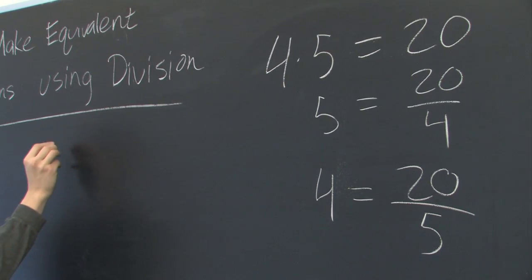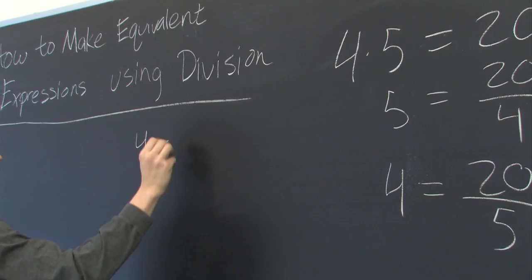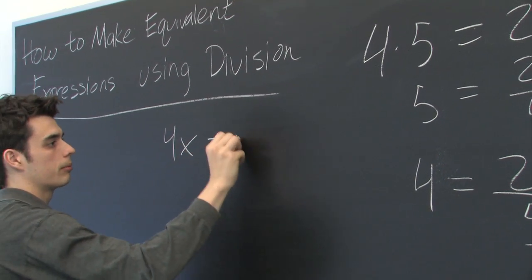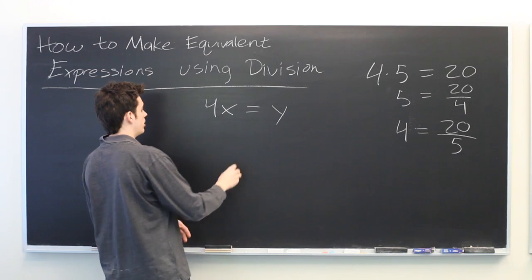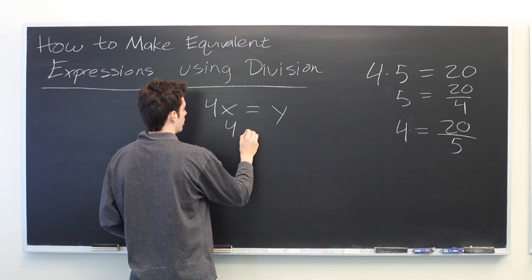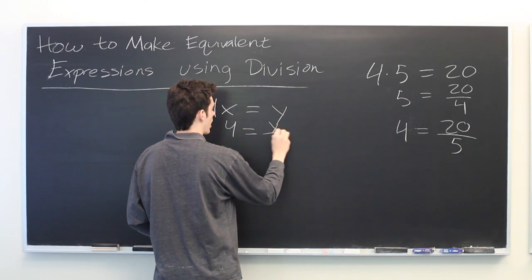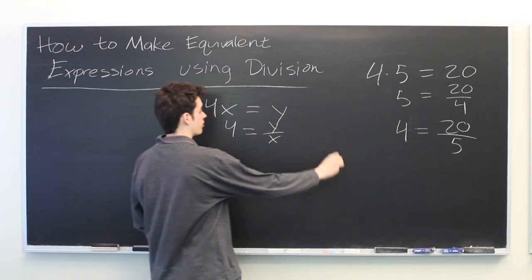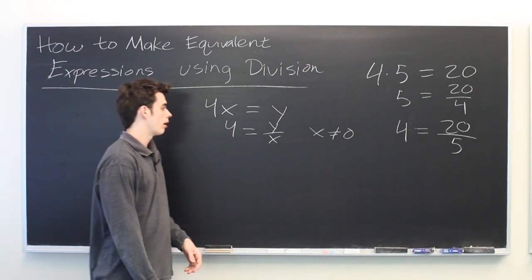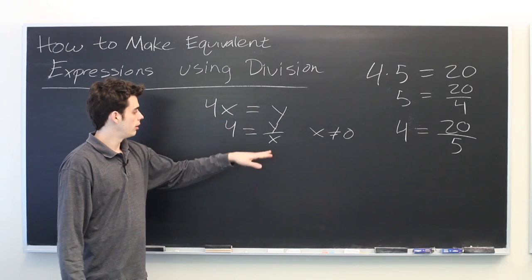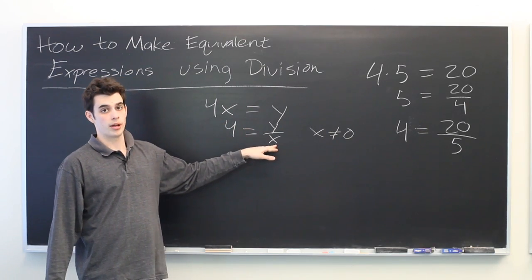But we can do a similar thing using variables. From here, we can divide both sides by x to get equals y over x if we assume that x is not equal to 0. Because if x were equal to 0, this would be undefined.